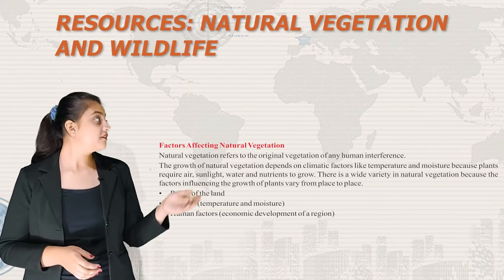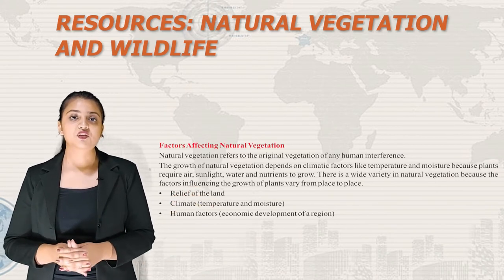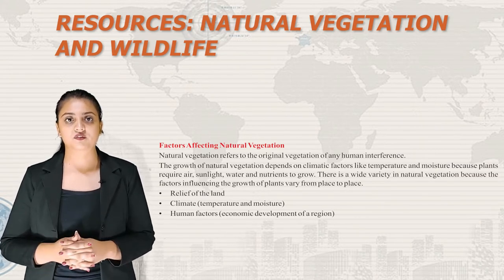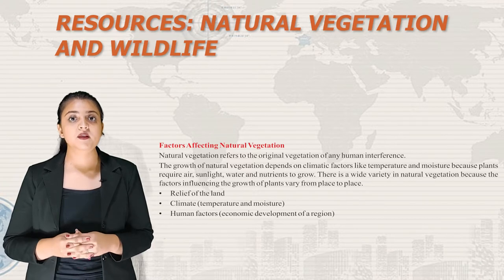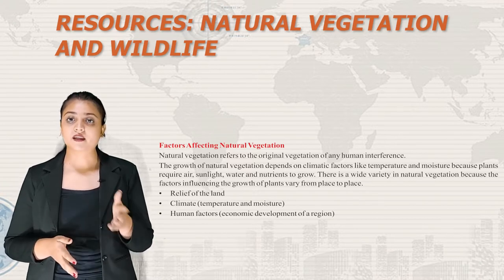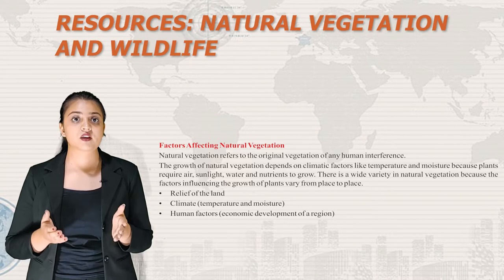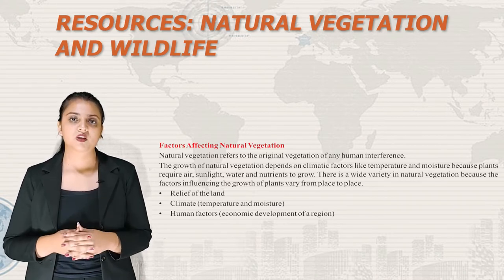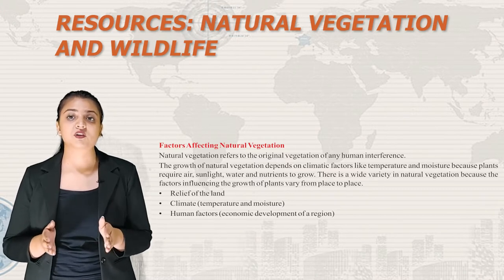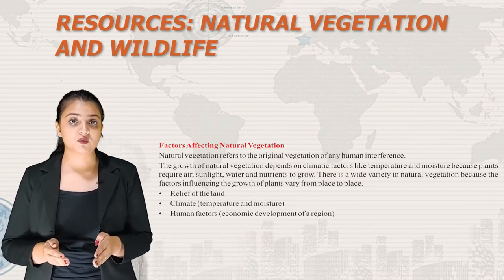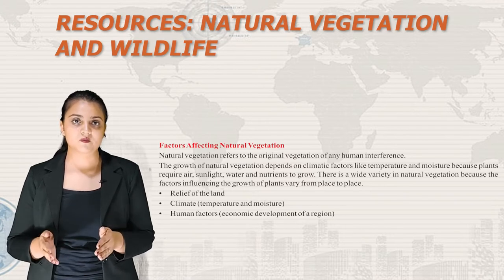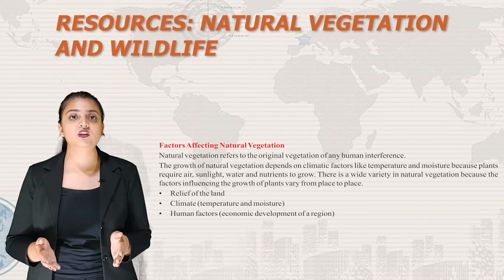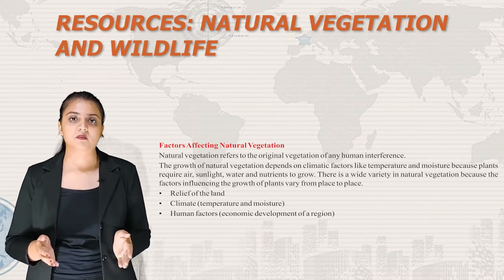Now let us talk about factors affecting natural vegetation. Natural vegetation refers to the original vegetation of any area without human interference. The growth of natural vegetation depends on climatic factors like temperature and moisture, since plants require air, sunlight, water and nutrients to grow. There is wide variety in natural vegetation because influencing factors vary from place to place, such as relief of the land, climate, and human factors like economic development of a region.